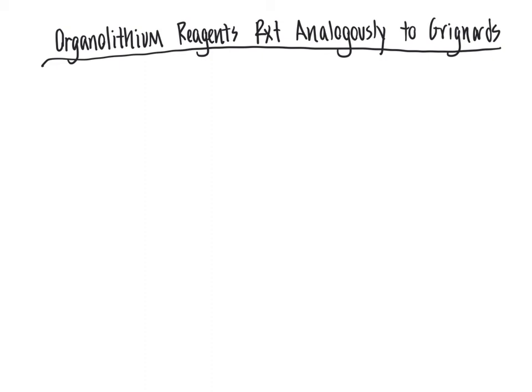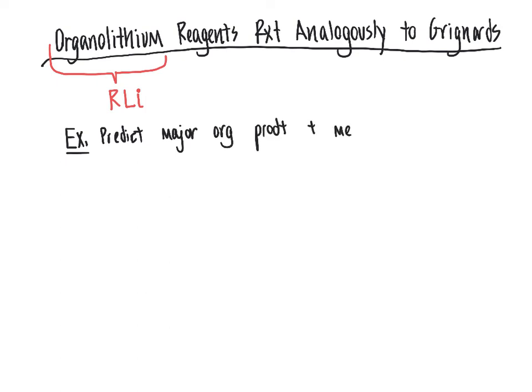Like Grignard reagents, organolithium reagents — where carbon is directly bonded to lithium — react similarly, attacking epoxide rings, enabling ring opening, and generating a new carbon-carbon bond. We can handle and react organolithium reagents analogously to Grignard reagents in reactions with epoxides. Let's take a look at an example problem where we predict the major organic product and work through the mechanism.